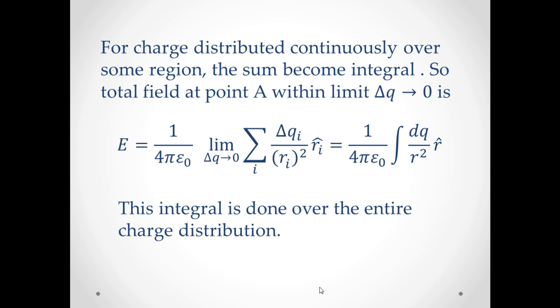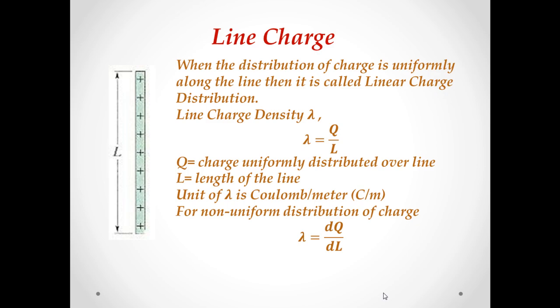Since the charge is distributed continuously over some region, the sum becomes integral. Hence, total field at A within the limit delta qi tends to zero is given by this equation. Here this integral is done over the entire charge distribution.